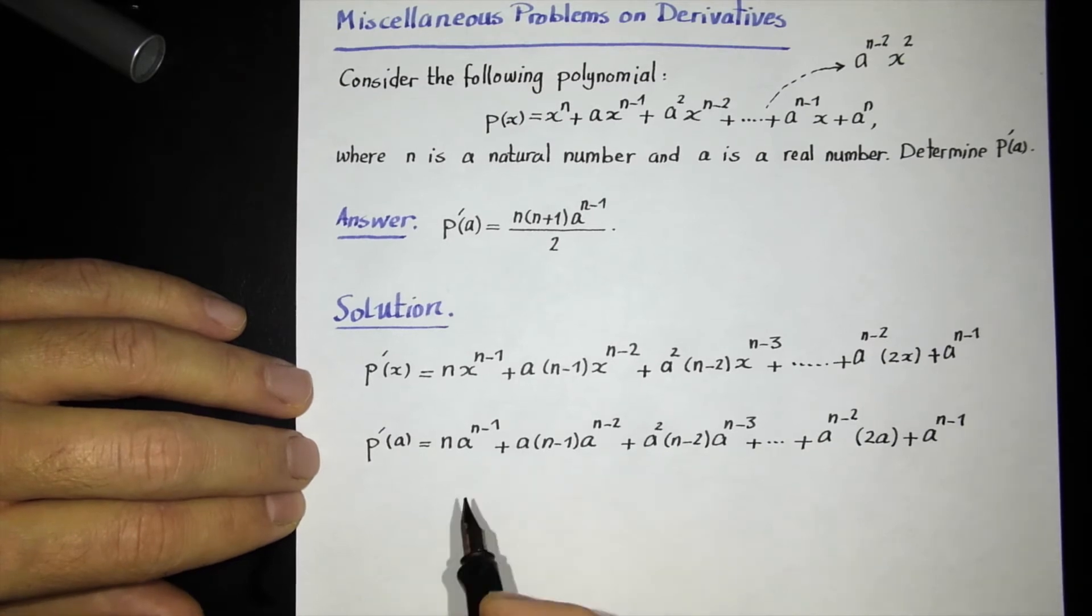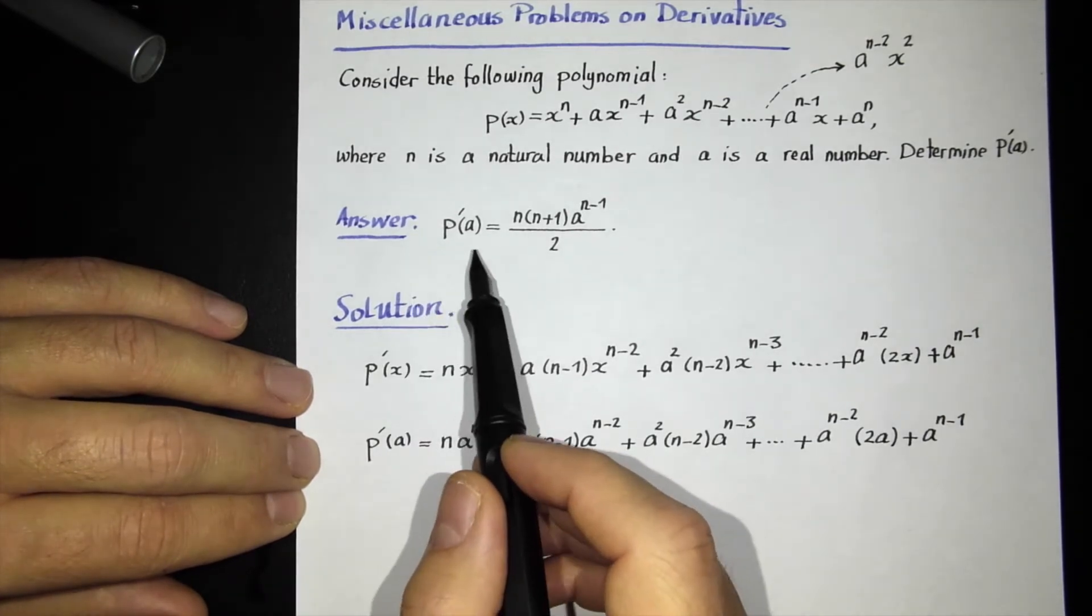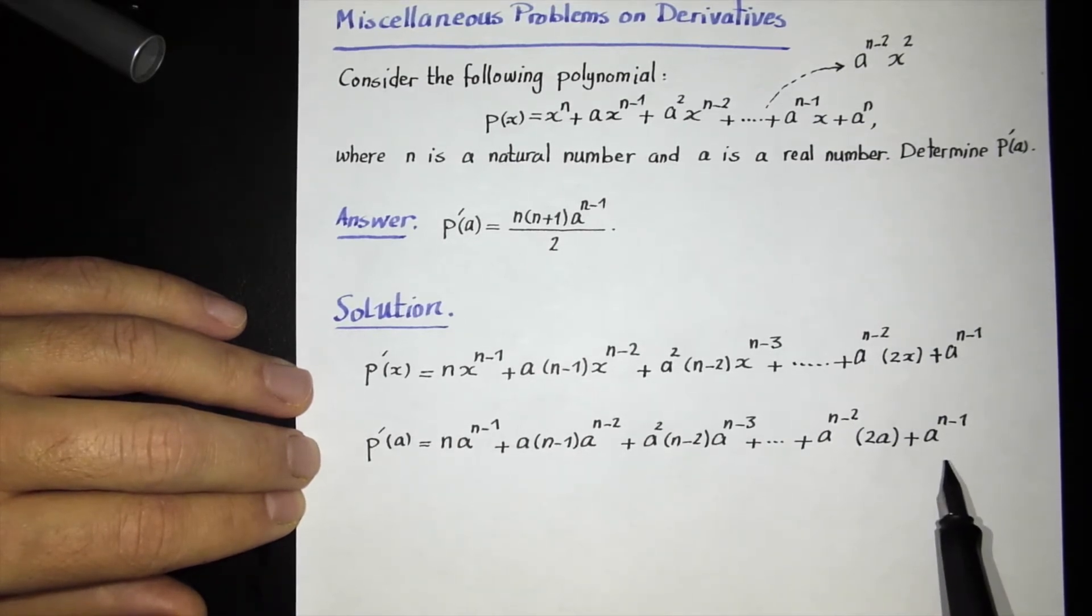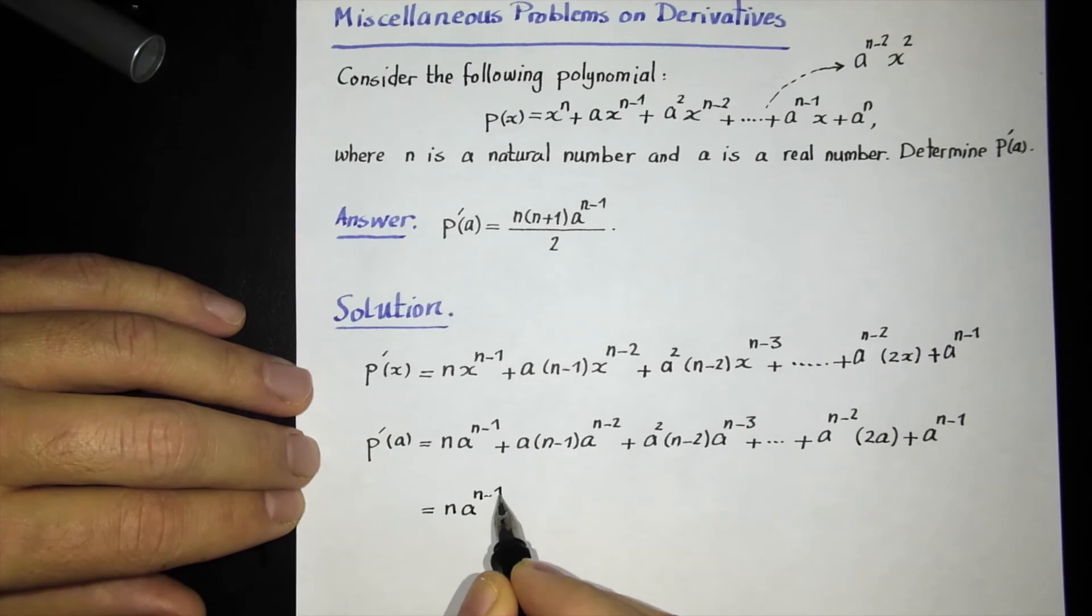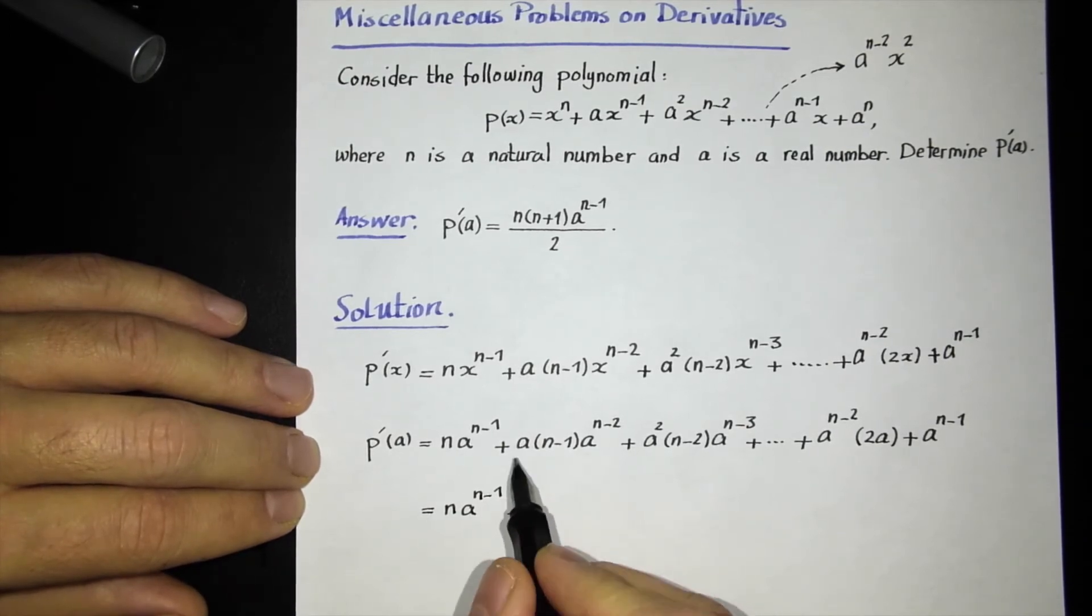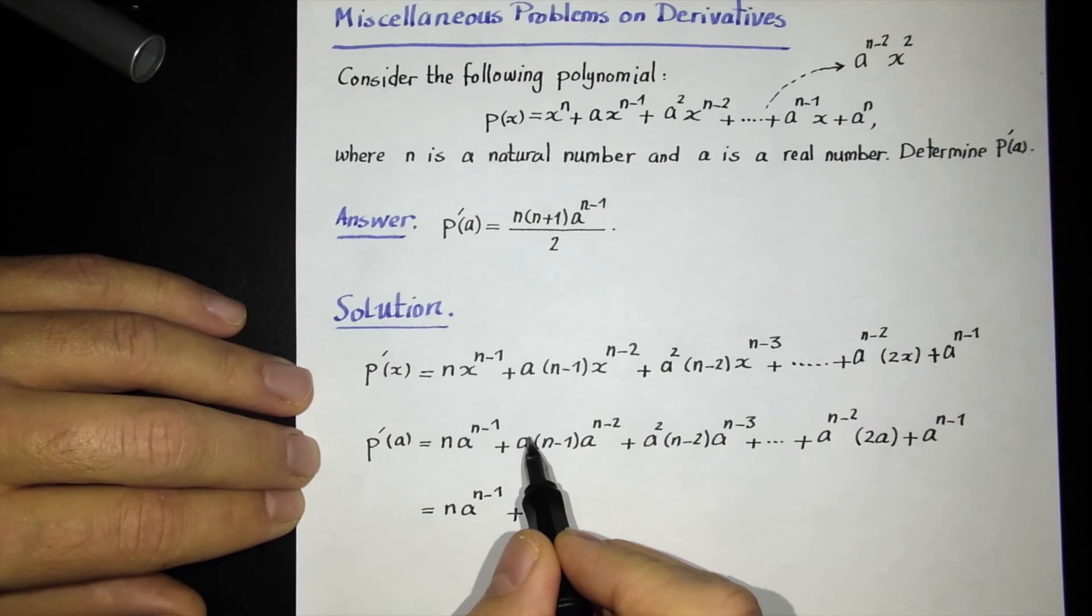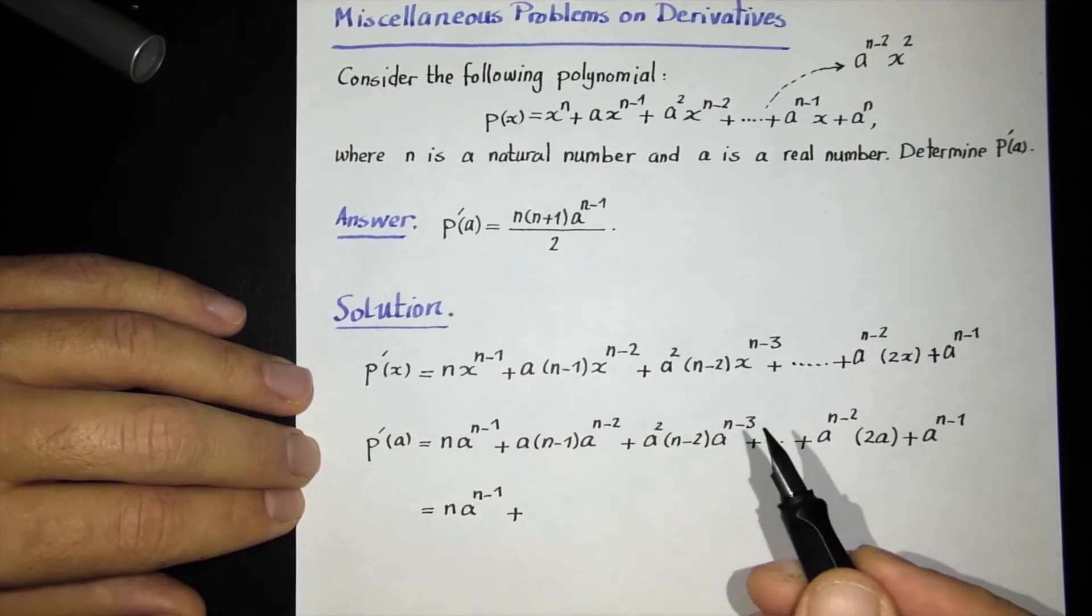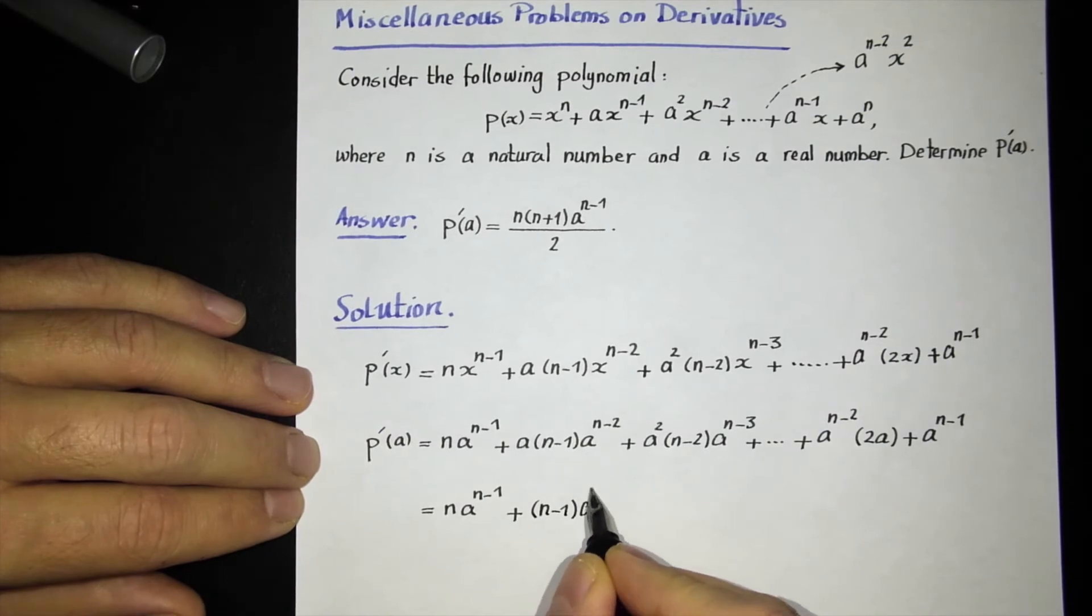Now I have to simplify this a little bit. So far, I have calculated P'(a). But to reach the answer given in the problem, I have to do some simplifications on this sum. It becomes equal to, let me simplify each term. The first term cannot be further simplified. But look here, I have a here and a to the n minus 2 here. The exponent of this a is 1, which is not written. When I multiply these two, I add the exponents. So (n-2) plus 1 becomes n minus 1. And I also have a factor of (n-1) here, so this becomes (n-1) times a to the n minus 1.